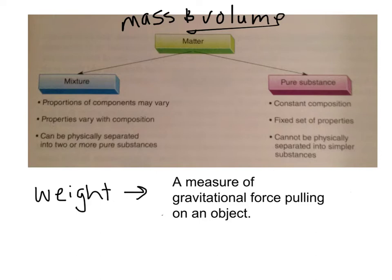On the other side, we have pure substances. Pure substances have a constant composition — they're the same all the time. They have a fixed set of properties; water is H₂O no matter where you go. Pure substances cannot be physically separated into simpler substances; they have to be chemically separated. So with physical separation, I can change mixtures and get more things, but with pure substances, I cannot.